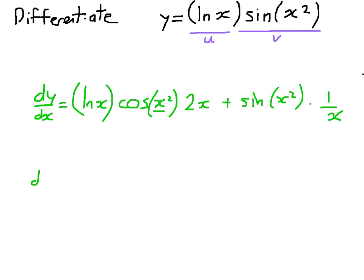Okay? Now all I'm going to do is show you how we can tidy that up easily. Remembering what goes with what. So I'm going to bring that 2x to the front. 2x times the natural logarithm of x times the cosine of x squared. And if you want to put that in brackets, feel free. Plus.